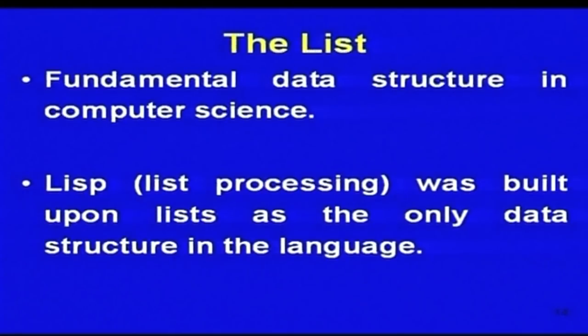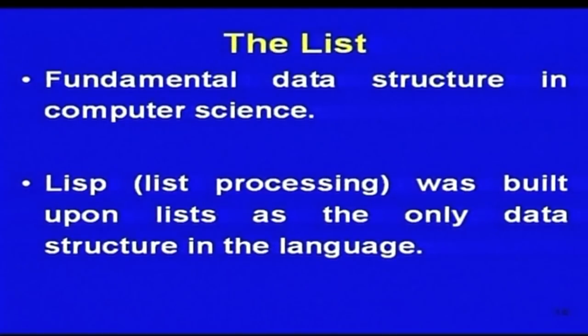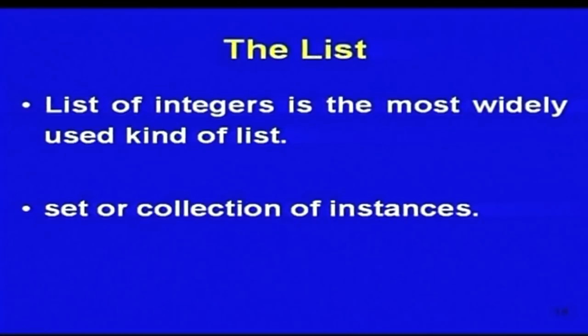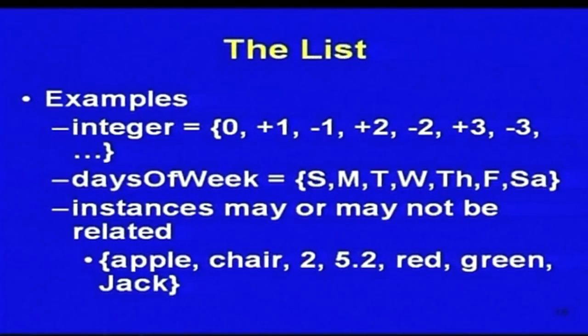First we will go to the simplest data structure, which is a list. This is a fundamental data structure in computer science. List processing is considered one of the most important data structures and has been the inspiration for a particular programming language called Lisp. The list of integers is one of the most widely used kinds of list. There can also be collections and sets. An example of an integer list is: 0, +1, -1, +2, -2, +3...